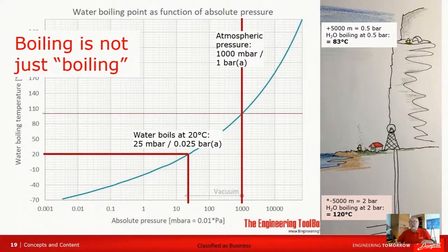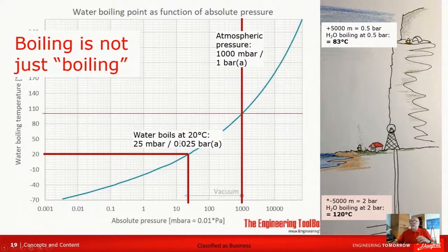I don't think you can get down to 5,000 meters, but at least some 4,000 meters, I think it is. But still, it is a higher temperature the water boils at, because you have a higher pressure there. And if you look at the curve — let's have a look at the curve here — you can see this is atmospheric pressure. And if you lower the pressure down to something like 0.025 bar or 25 millibar, the water will boil at 20 degrees Celsius.